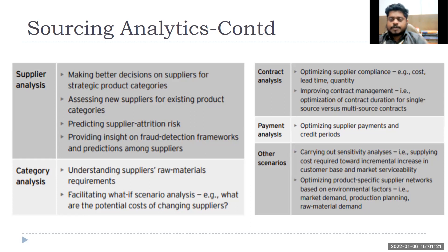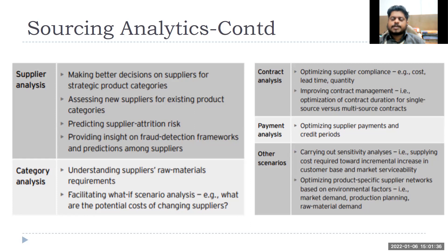Other scenarios include sensitivity analysis and optimizing product-specific supply networks based on environmental factors, market demand, and raw material demand. For big companies like Apple, Hyundai, or Samsung operating in 100-plus countries, deciding where to put warehouses or plants is a challenge requiring optimization or simulation — not just predictive or descriptive analytics.